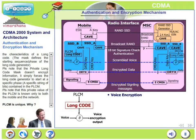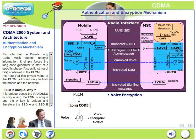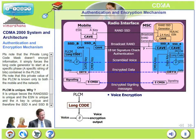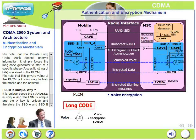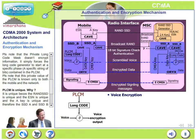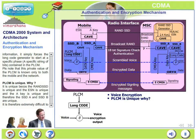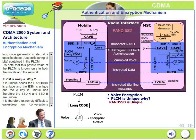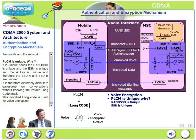Please note that the private long code mask does not directly encrypt voice signals. It simply forces the long code generator to start at a specific phase or a specific string of bits as commanded by the PLCM. This private value of PLCM is known only to the mobile and the network — nobody else knows it. The PLCM is unique because the RAND SSD is unique and the ESN is unique for a particular mobile, and the A key is also unique for a particular mobile.